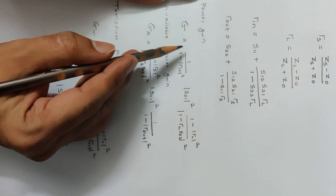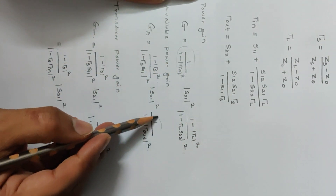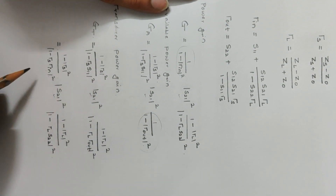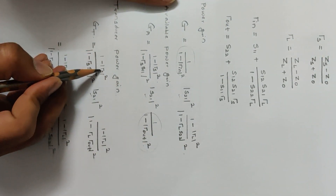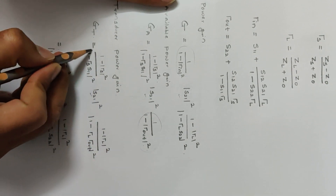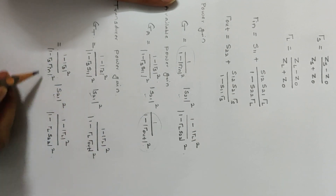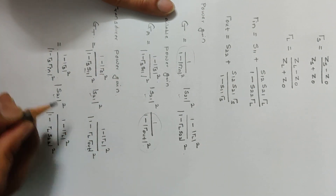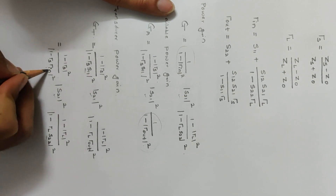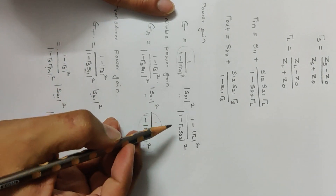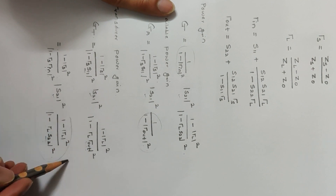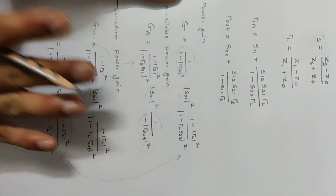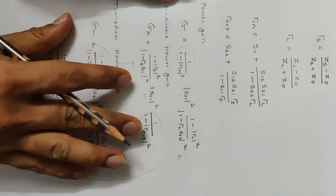To recap the memorization: write 1/(1 − |γin|²) for G and 1/(1 − |γout|²) for Ga; every formula contains |S21|². For the transducer power gain Gt there are two equivalent expressions — one using S11 with γs and γout, and the other using S22 with γl and γin. Now we proceed to the actual numerical calculation of these gains.